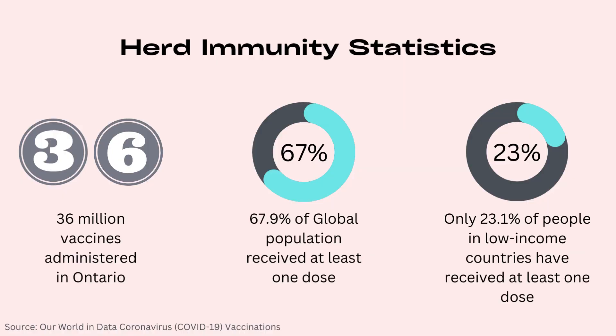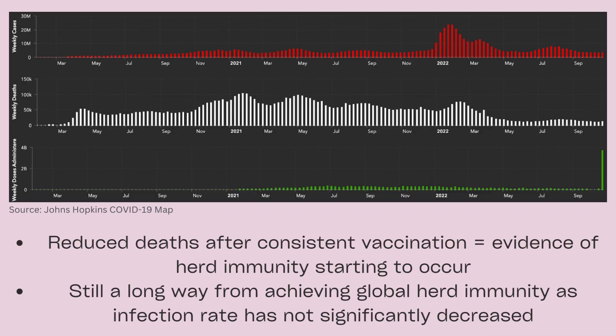Let's look at some statistics on the efforts to achieve herd immunity. According to COVID-19 Ontario vaccination data, more than 36 million vaccinations have been administered in Ontario alone. Looking globally, 67.9% of the global population has received at least one dose. However, only 23.1% of people in low-income countries have received at least one dose, which can be explained by the survey data where low-income individuals were more hesitant. COVID deaths are low compared to earlier in the pandemic, showing evidence of herd immunity starting to take effect, but we have not yet achieved global herd immunity due to infection rates still remaining high. Thus, with continued vaccination, especially in low-income countries, we can hope to increase herd immunity against the COVID-19 virus.